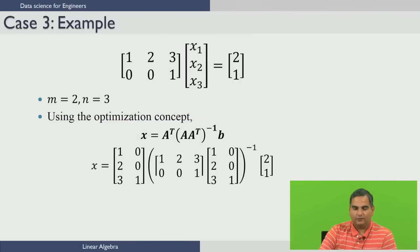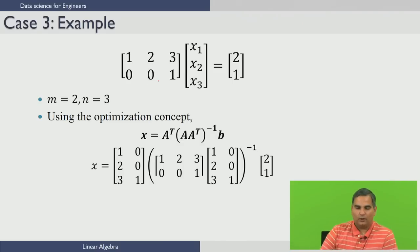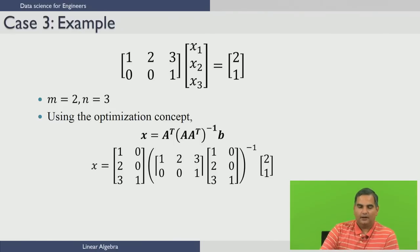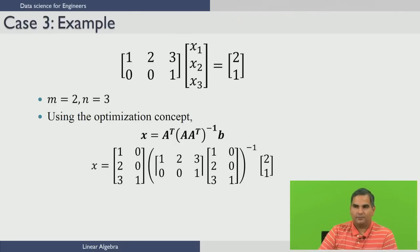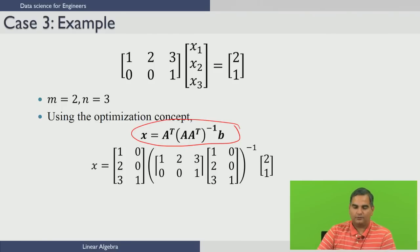Let us take an example to understand this. We have Ax equal to b where A is [1 2 3; 0 0 1] and b is [2; 1]. Notice there are two equations and three variables. These equations read as: x1 plus 2x2 plus 3x3 equals 2, and x3 equals 1. Clearly, x3 equal to 1 must be a solution. The question is how to choose x1 and x2. We will use the optimization solution: x equal to A-transpose (A A-transpose) inverse b.